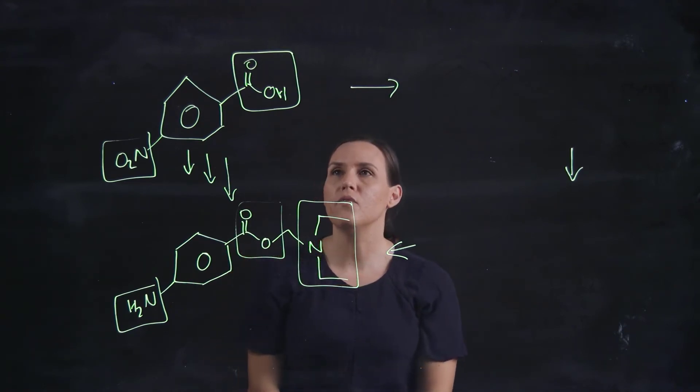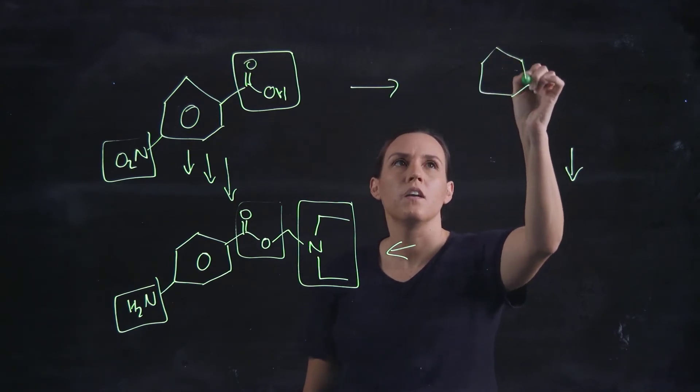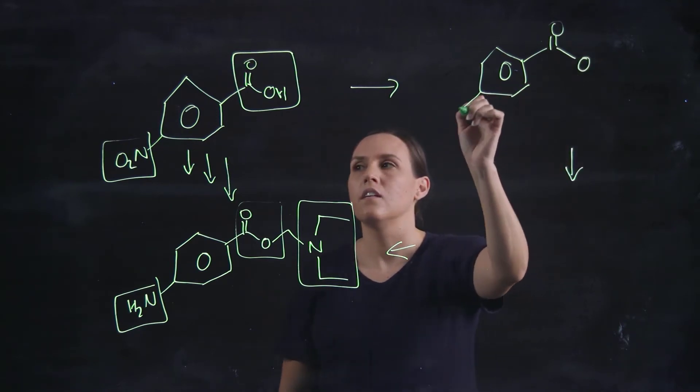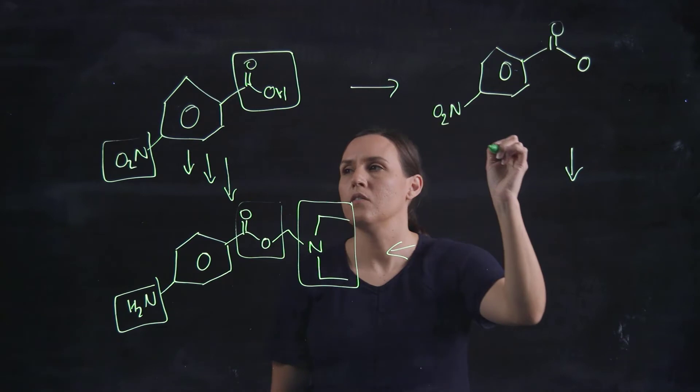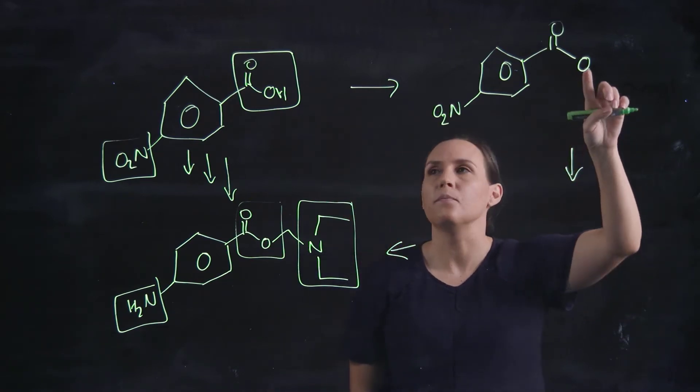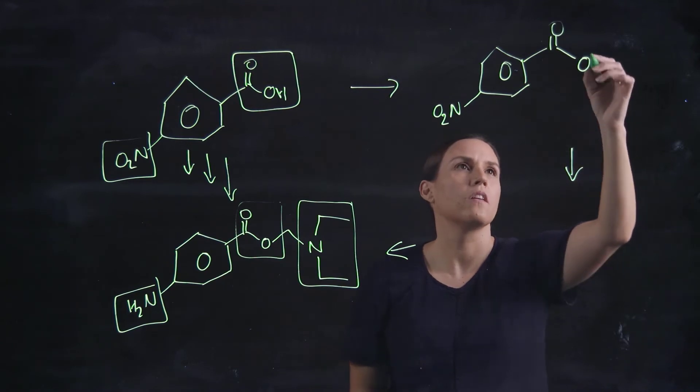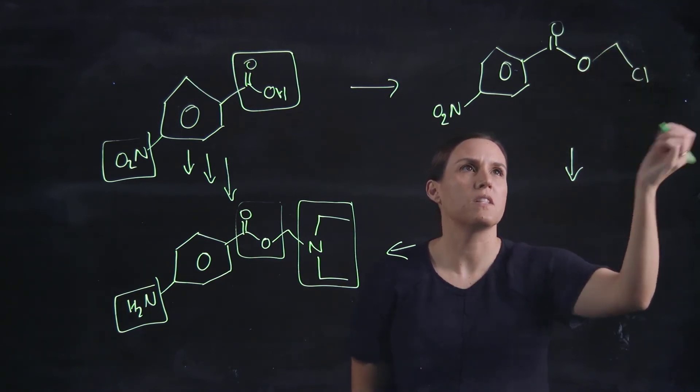So if we follow that forward, the first one we would do would be to form the ester. Now we need a good leaving group, still at NO2, so we need one, two, one, two, and then a good leaving group such as chlorine.